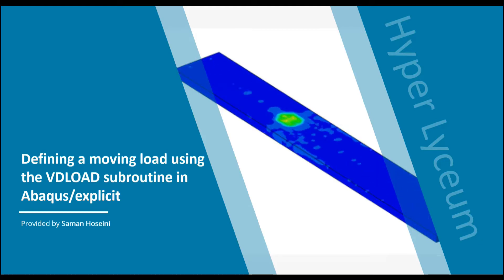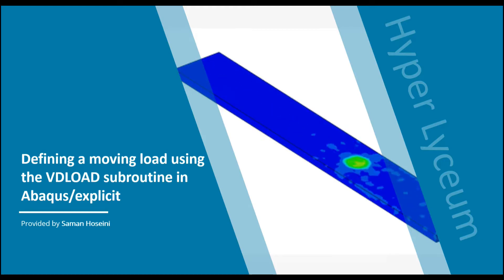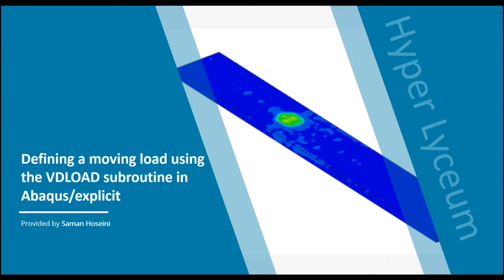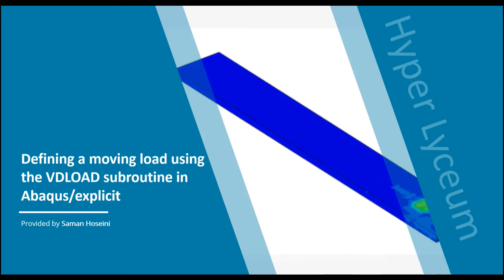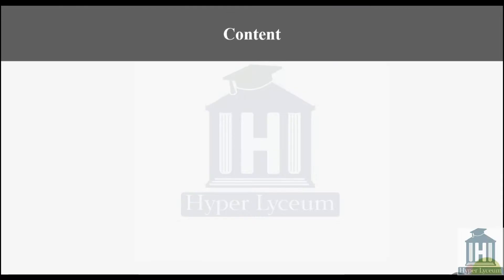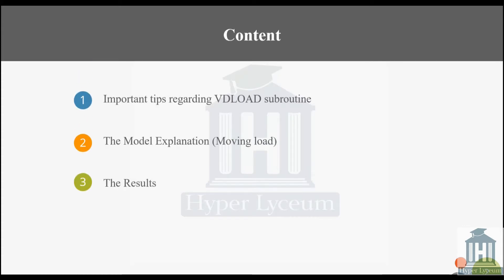To define the complex load distribution or motion of the components for explicit models, the VDLOAD subroutine is helpful. In this tutorial, we first introduce the VDLOAD subroutine and give some tips, and then we will explain the subroutine using an example of the moving load.